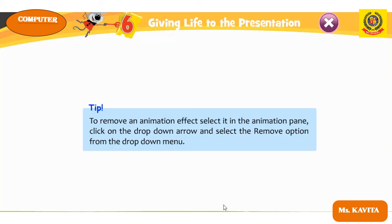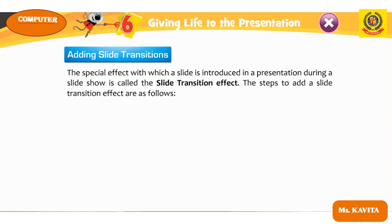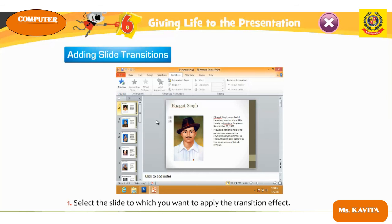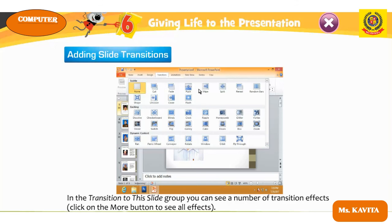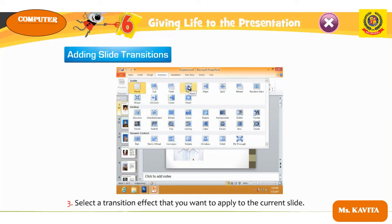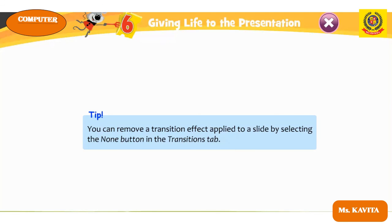Adding slide transitions: the special effect with which a slide is introduced during a slide show is called a slide transition effect. To add a transition effect, select the slide, click the Transitions tab, and in the Transition to This Slide group you will see a number of transition effects. Select the desired effect for the current slide. To apply it to all slides, click Apply to All. To remove a transition, select None in the Transitions tab.